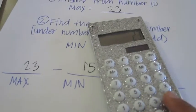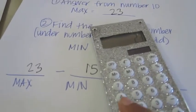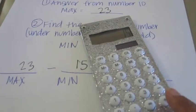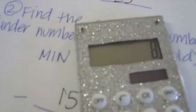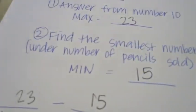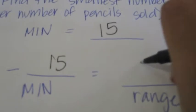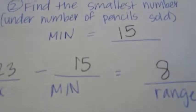23 minus 15 equals 8. Write 8 — that's your range.